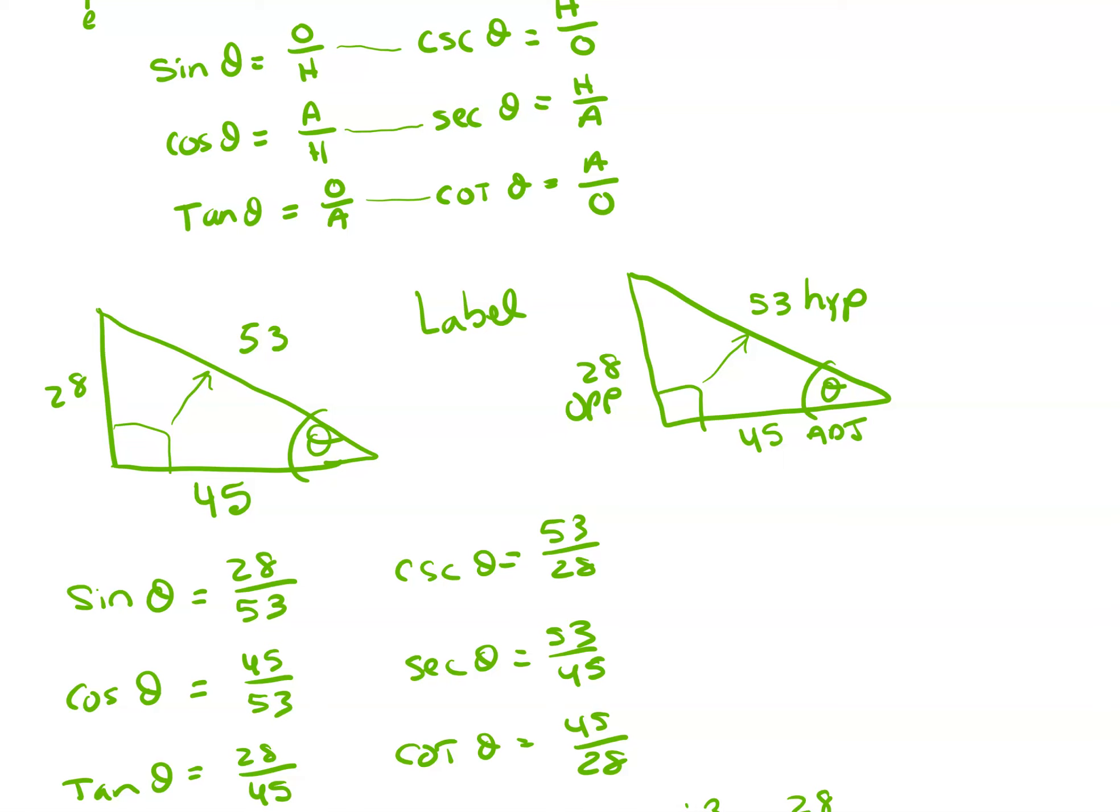So once I have these labeled, then it's very easy to go up here and pick off the numbers I need. So the sine theta, O is opposite, so it's 28. H is hypotenuse, 53, so it's 28 over 53. Cosine theta, adjacent over hypotenuse, so 45 over 53. Tangent theta, opposite over adjacent, 28 over 45.